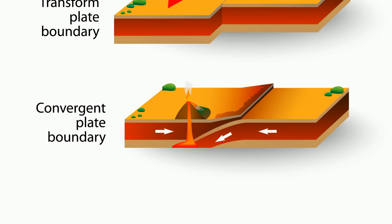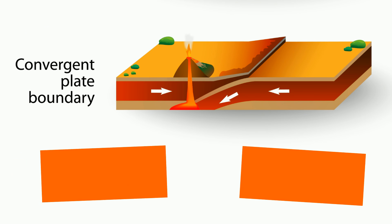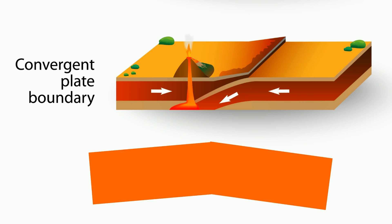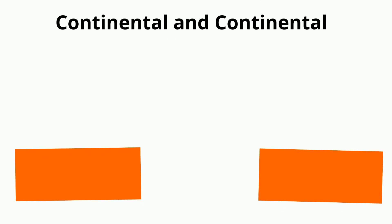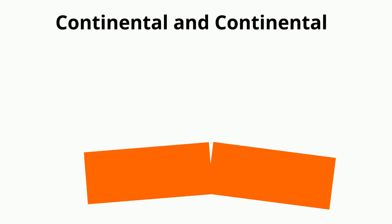Convergent boundaries occur when two plates collide. There are three major types. First is continental to continental. This occurs when two plates of continental crust collide. They buckle and thicken, and this causes mountains to form.